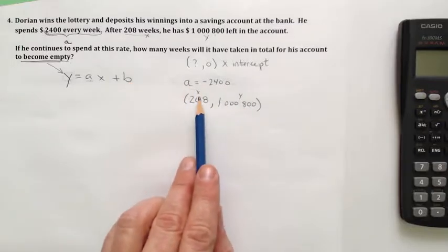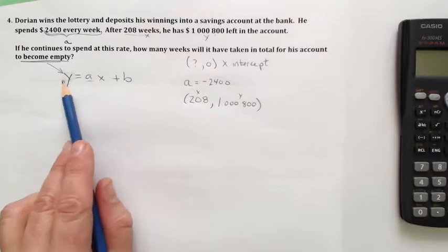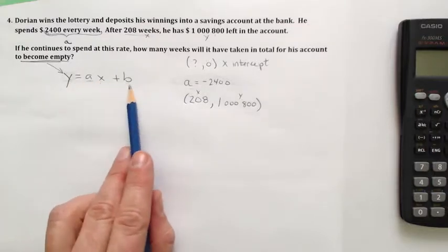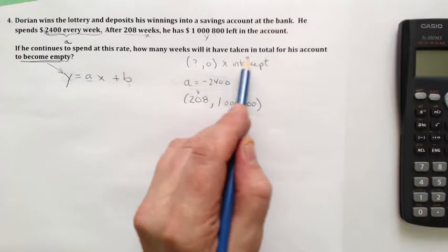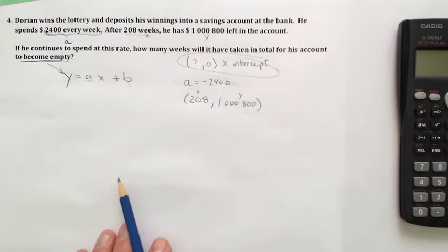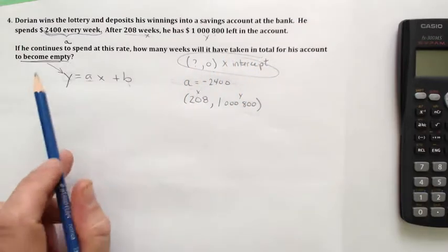We've got an a but we don't have a b. We also though have an x and a y. We've got an a and x and a y—that's going to allow us to get the b. Once we have the a and the b, we can go ahead and answer the question itself, which is what happens when the Y is zero, or the amount of money in the bank account.